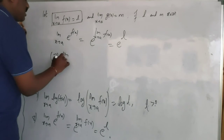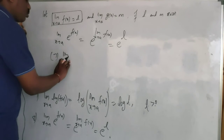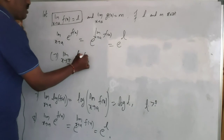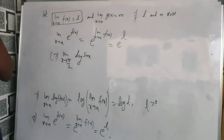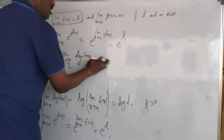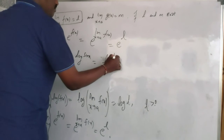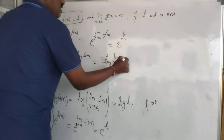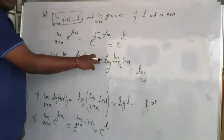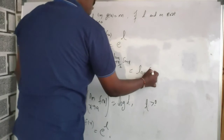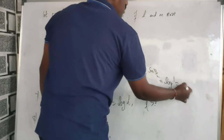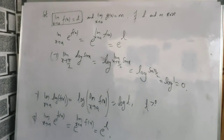For example using the logarithm property: limit extending to π/2 of log sin x. I can write this as log of limit extending to π/2 of sin x, which equals log(sin π/2). Sin(π/2) is 1, and log 1 is 0. So the answer is 0.